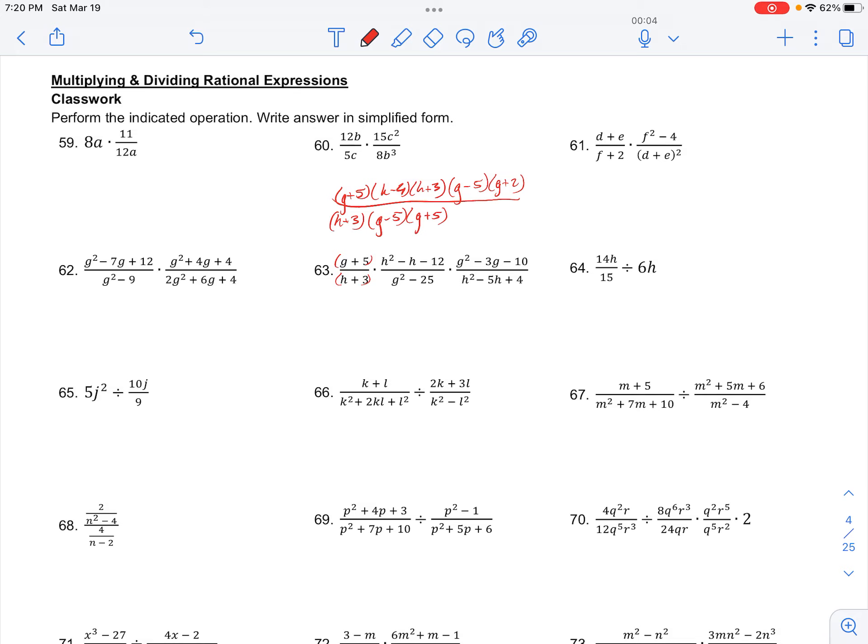And then we have h² - 5h + 4. So that factored is (h - 1)(h - 4).